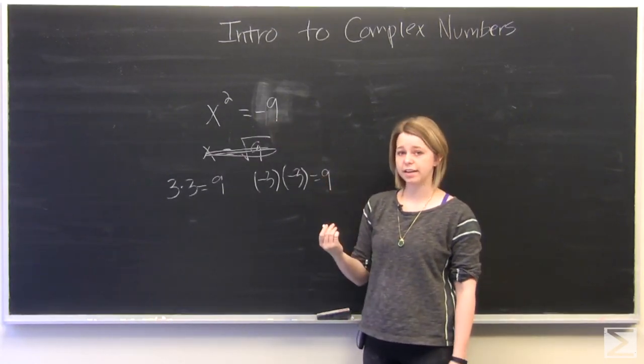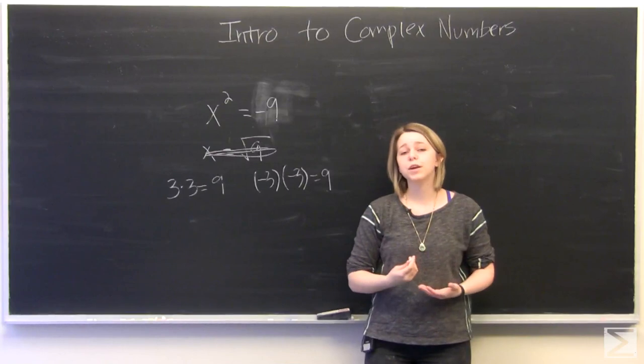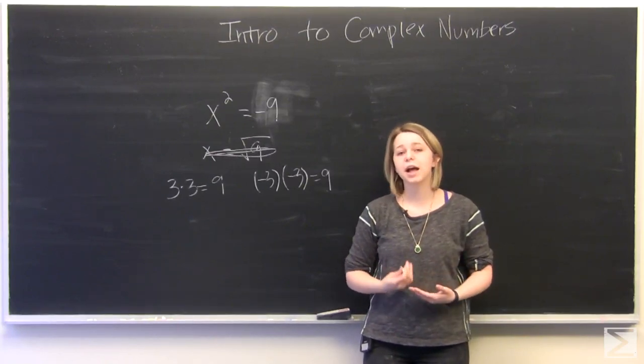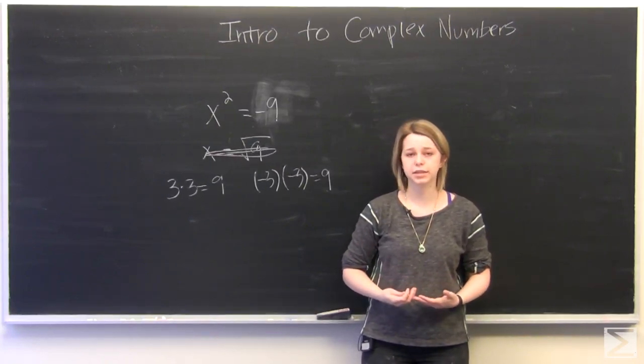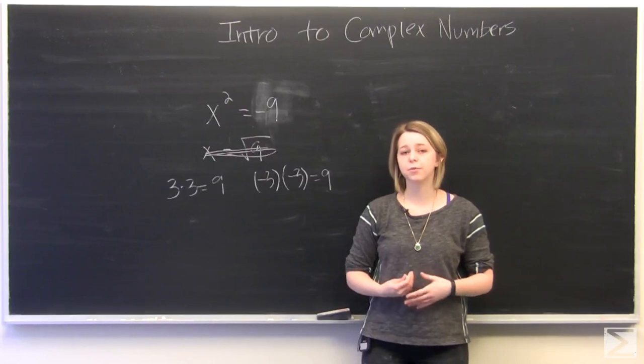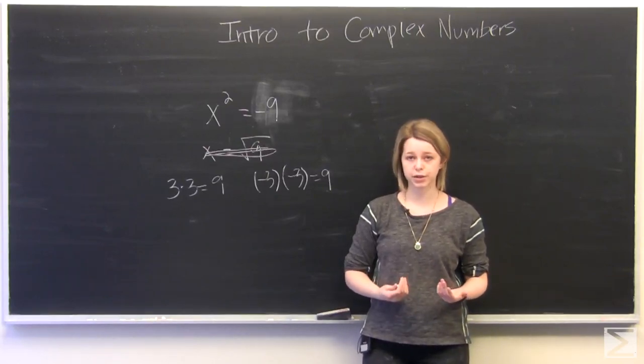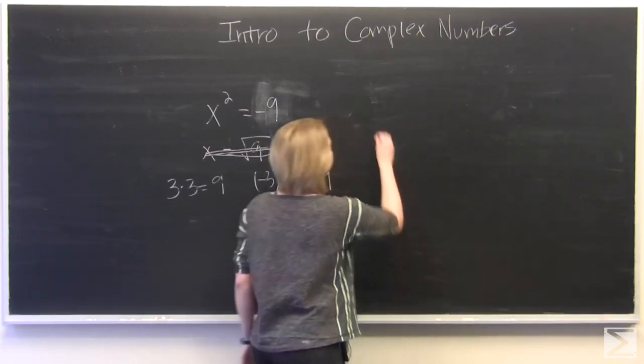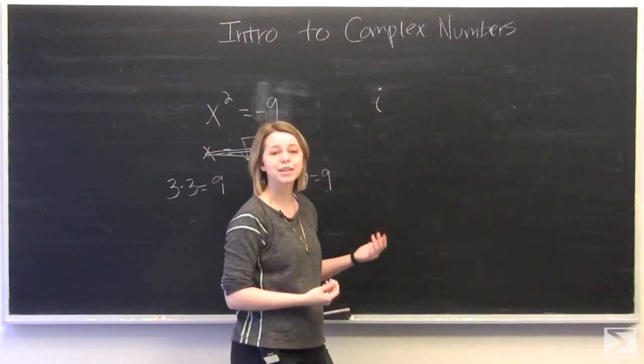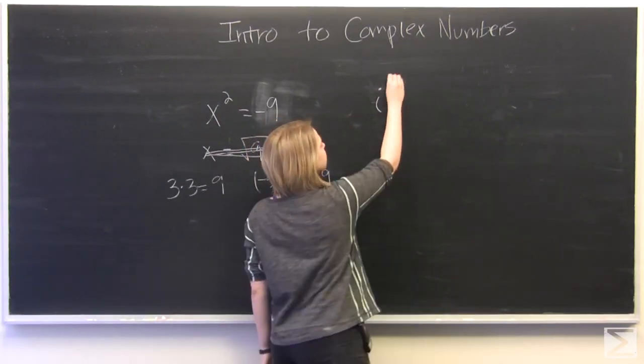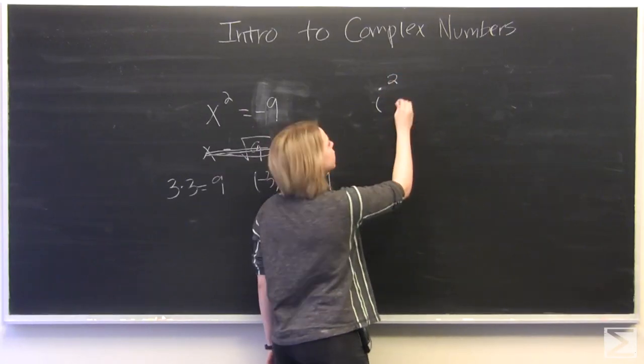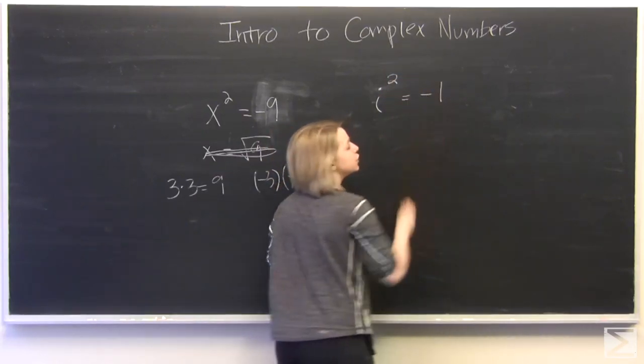So how do we account for this negative? It turns out there was no real way to explain this until mathematicians realized the possibilities and assigned a number that when multiplied by itself is equal to a negative number. And that number is i, which is sometimes known as the imaginary number. So i, when it is squared, is equal to negative 1.